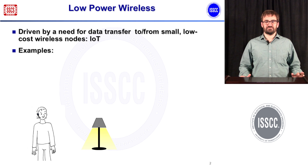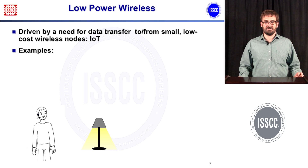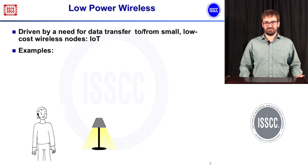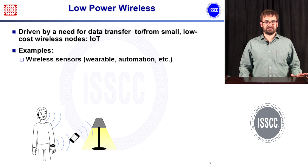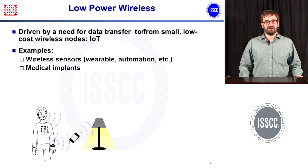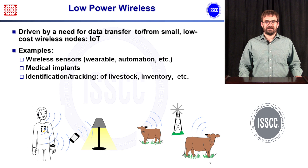The motivation for the increasing interest in low-power wireless systems is driven by the need to transfer data to and from small, low-cost wireless nodes — basically the internet of things. Examples of applications include wireless sensors, both wearable and for automation, medical implants where you need to transfer data from inside the body, and identification and tracking of things such as livestock or inventory inside a warehouse.